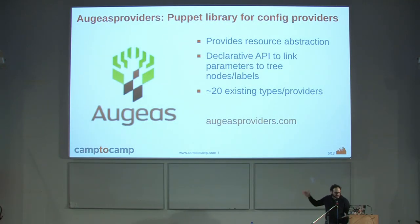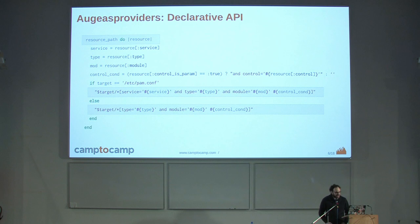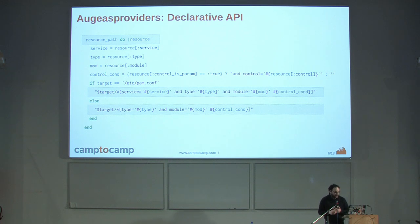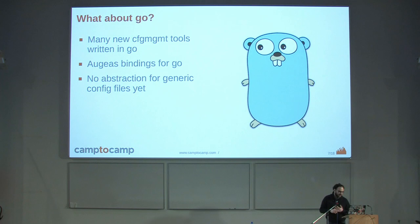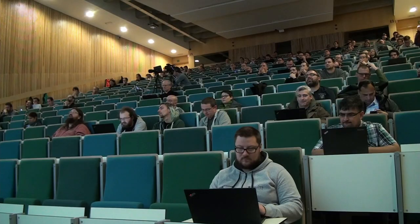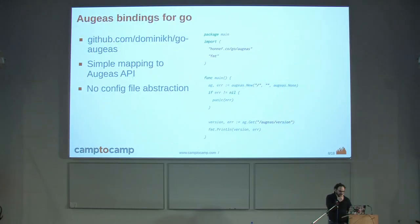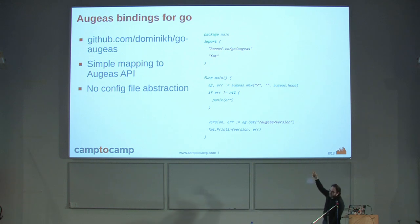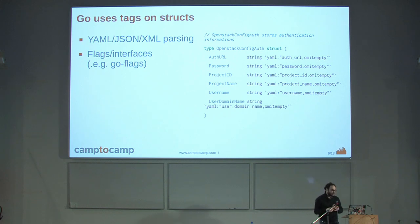There are bindings for different languages, and there's a project started in 2012 by Dominique Clere, who was at Red Hat at the time, called OGS providers — providing an abstraction in Puppet to manage configuration files with native Puppet resources. There are about 20 types that exist, and the idea was to make this API to build types and providers in Puppet declarative in some way. So what about Go? A lot of tools now are written in Go — Docker, Terraform, all this stuff. It's still useful to edit configuration files in a very precise way. There are some OGS bindings for Go, but the abstraction is not really great. It's the bindings managed by Dominique on GitHub, and there's no config file abstraction — it's essentially just mapping the C API.